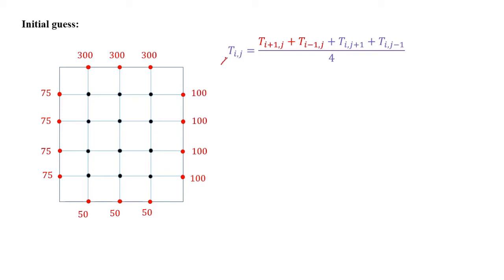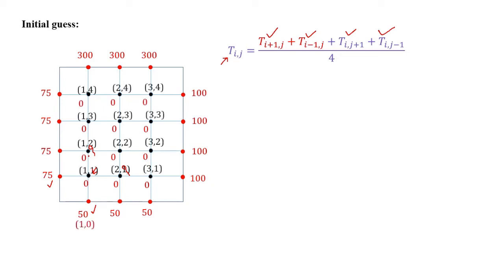From the final formulation of T_ij we realize that to calculate the temperature of any node we need the temperature values of four neighboring nodes. For example, for a particular node the temperature of the left and bottom nodes are known from the given boundary conditions, however the temperature of the right and top nodes are not known. Hence in numerical methods it is standard practice to start the calculation with some initial guess. For simplicity, let us assume the temperature of all intermediate nodes is 0.